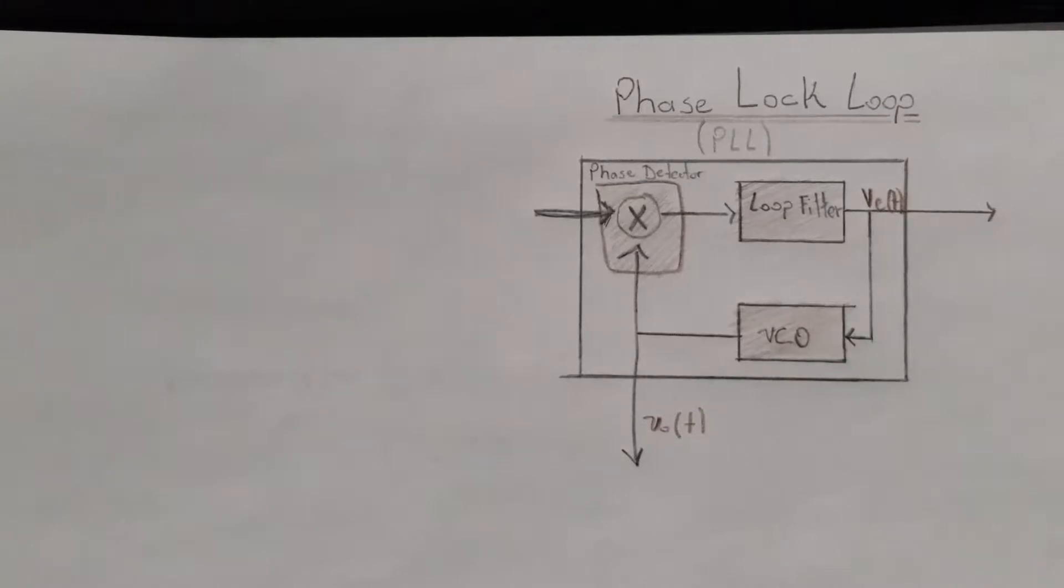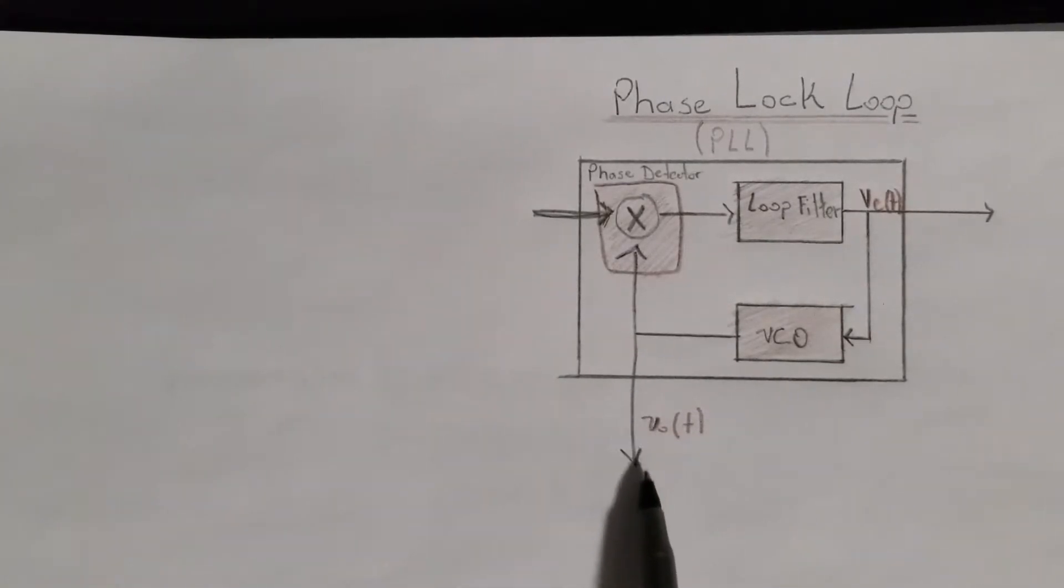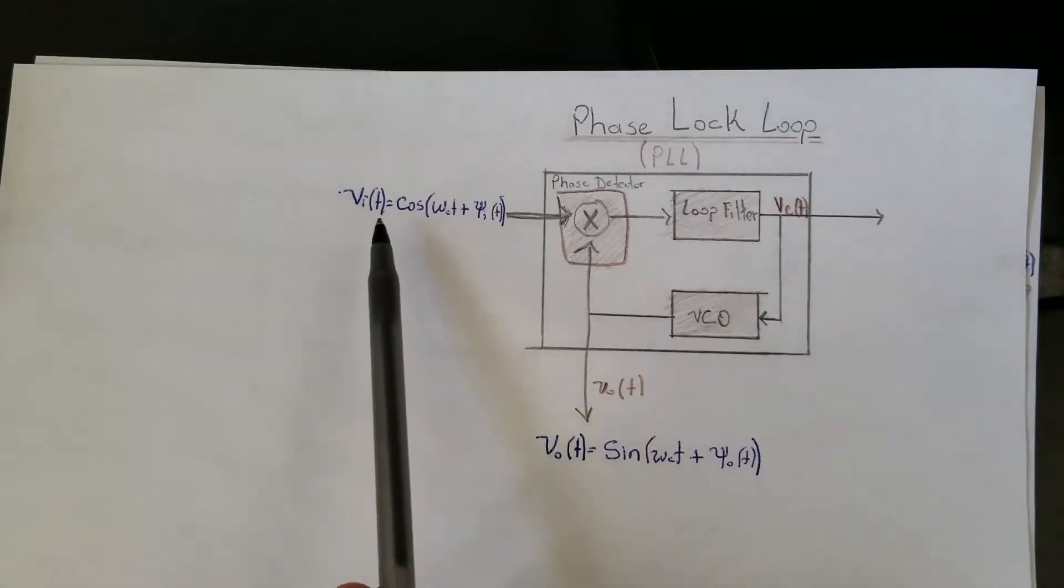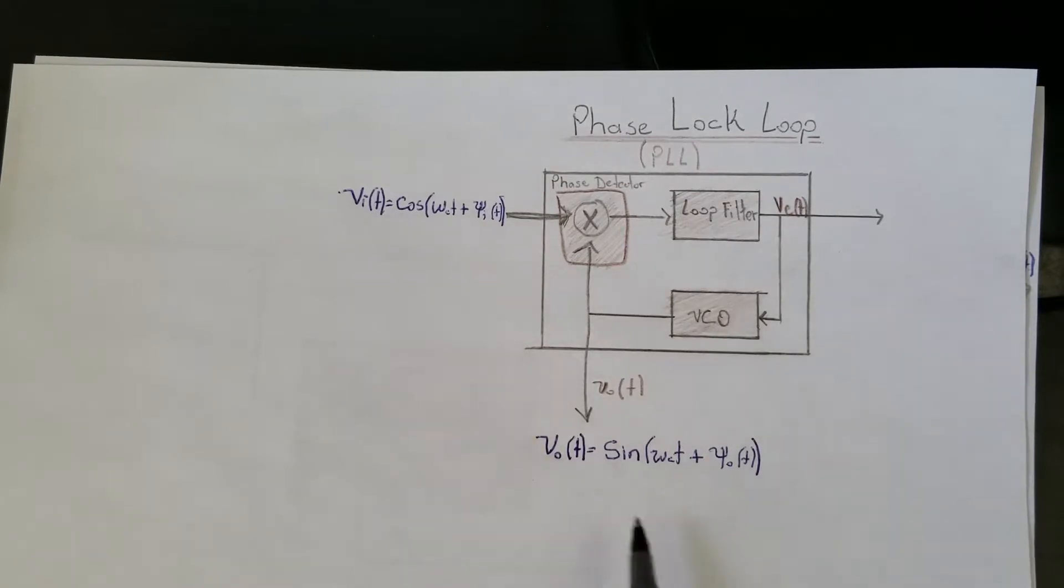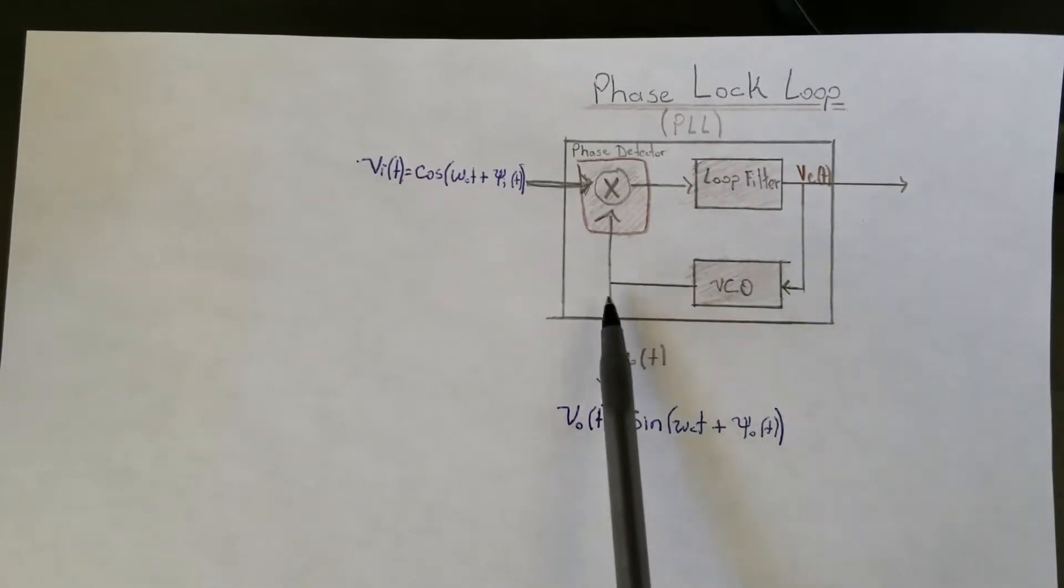Our focus will mainly be this input and this output. Notice the 90 degree phase shift - when I get an input that's a cosine, the output will be a sine. As can be seen here, this is a closed loop system.